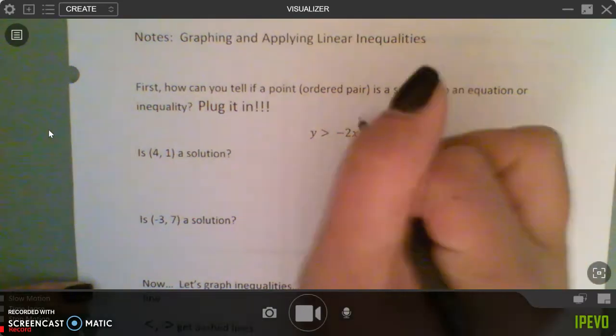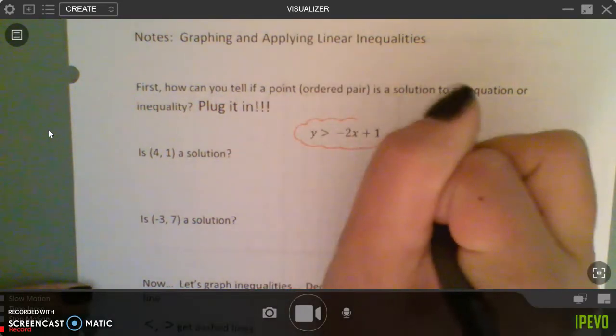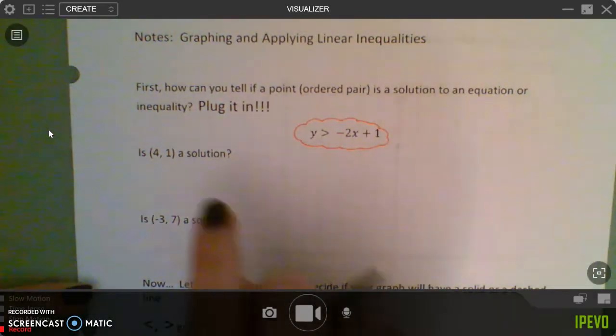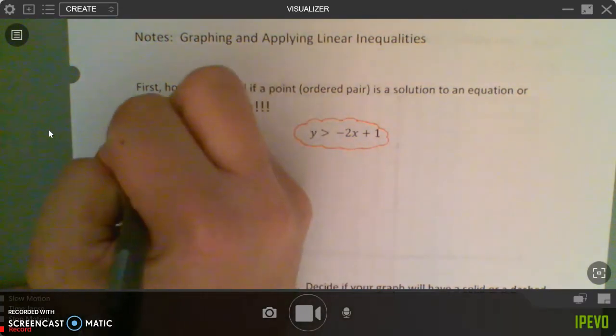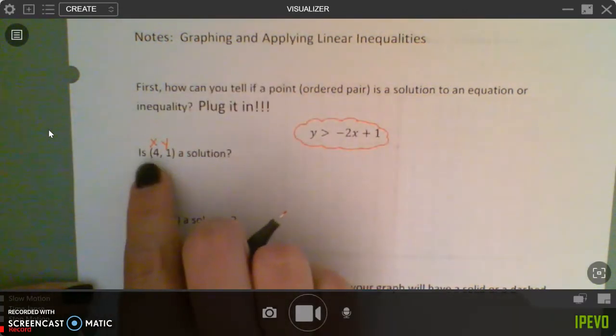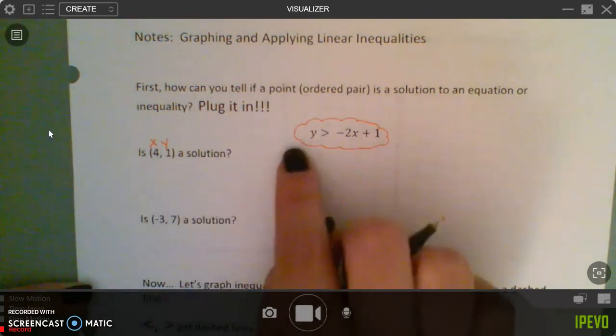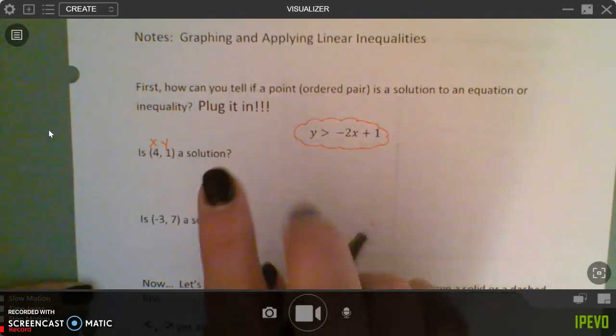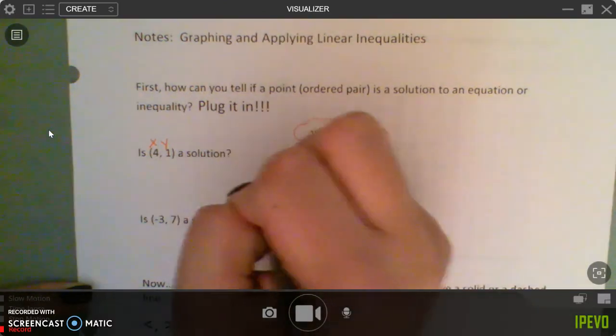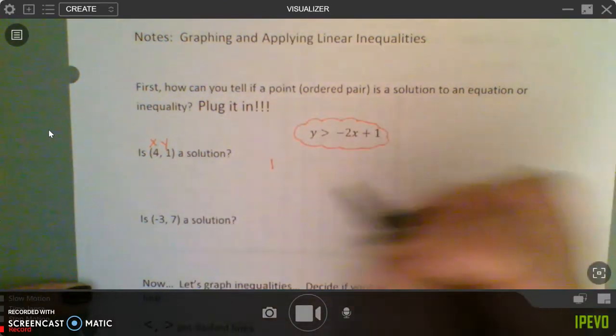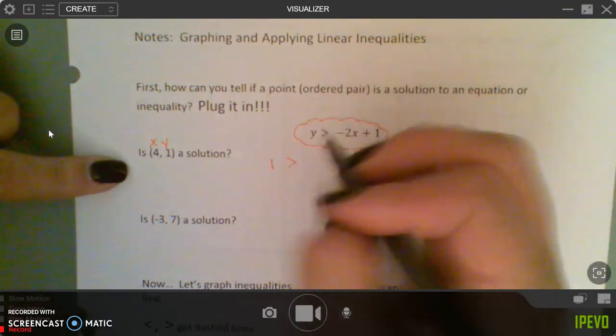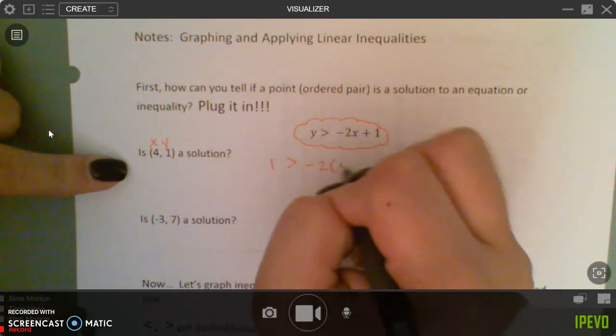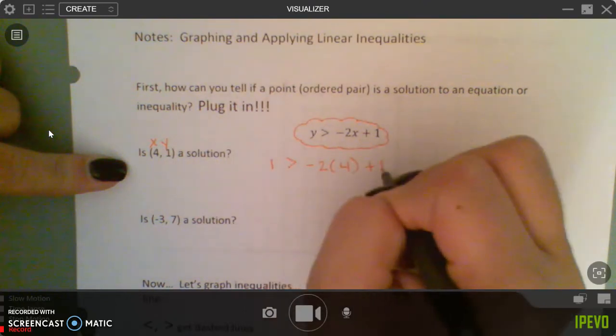So here we're given this equation, and we're also given these two xy points. So we are going to plug the x in for the x, and then the y in for the y. So we're plugging in two things. So it's going to be 1 is greater than, because that was my y over here, negative 2 times 4 plus 1.